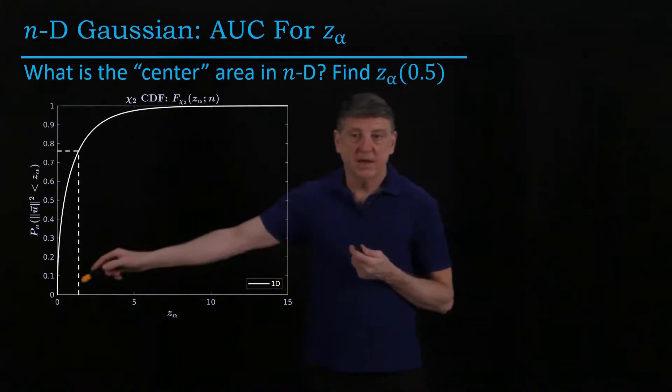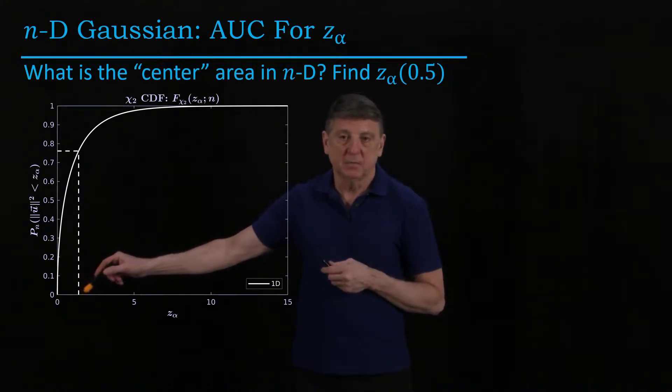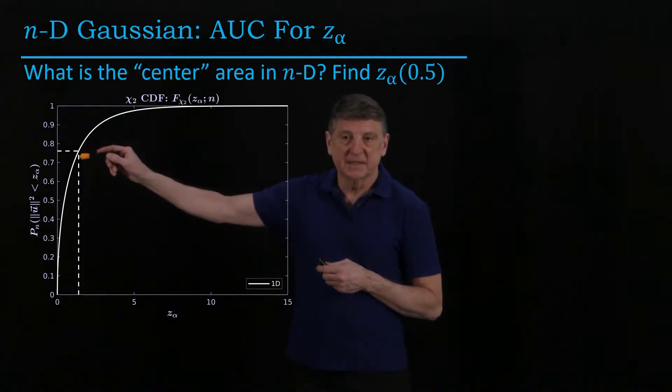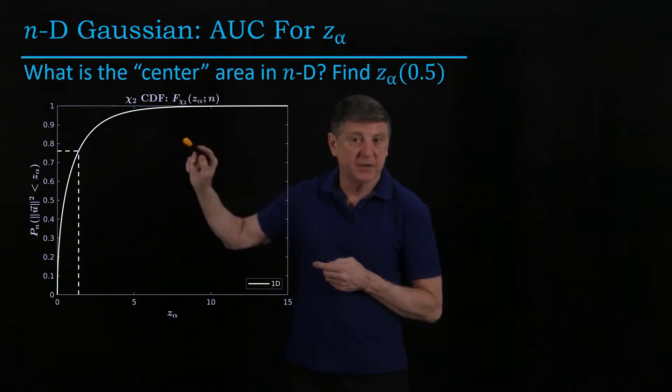When we're at one dimension, and we take our little z alpha of about 1.38, what we find is that 76% of our data are contained centrally and the rest are not.